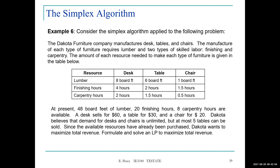We have information about the operations that need to be performed and how long is needed for each, depending on the type of product. Those are the coefficients associated with each product. At present, 48 board-feet of lumber, 20 finishing hours, and 8 carpentry hours are available — those are your capacity limitations, the right-hand side of your constraints. A desk sells for $60, a table for $30, and a chair for $20. Dakota wants to maximize the total revenue.